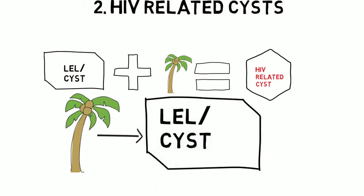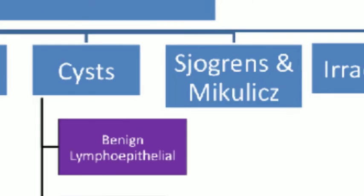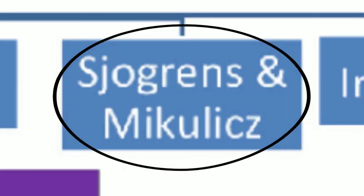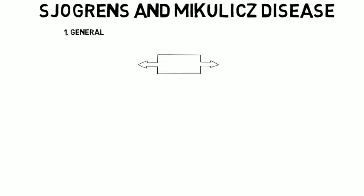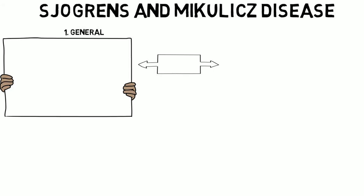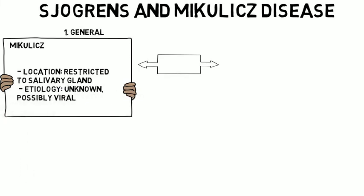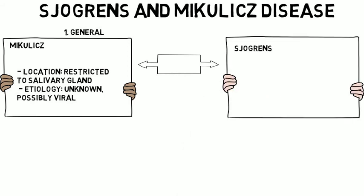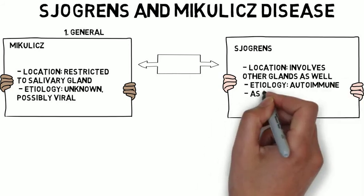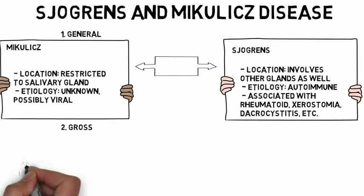Now let's discuss Sjogren's and Mikulich disease. A note about terminology: Mikulich disease is considered by some to be an outdated term, but others still use it — it refers to Sjogren's disease when restricted to the salivary glands, with unknown etiology, possibly viral or adenovirus. Sjogren's disease involves other glands as well and is autoimmune, associated with rheumatoid arthritis, xerostomia, dacrocystitis, etc. Clinically, there will be a small enlargement of the gland followed by a rapid, often palpable enlargement.